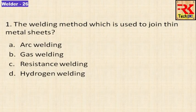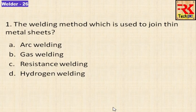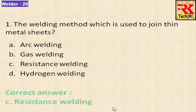First question: the welding method which is used to join thin metal sheets. Options are arc welding, gas welding, resistance welding, and hydrogen welding. The answer is resistance welding.